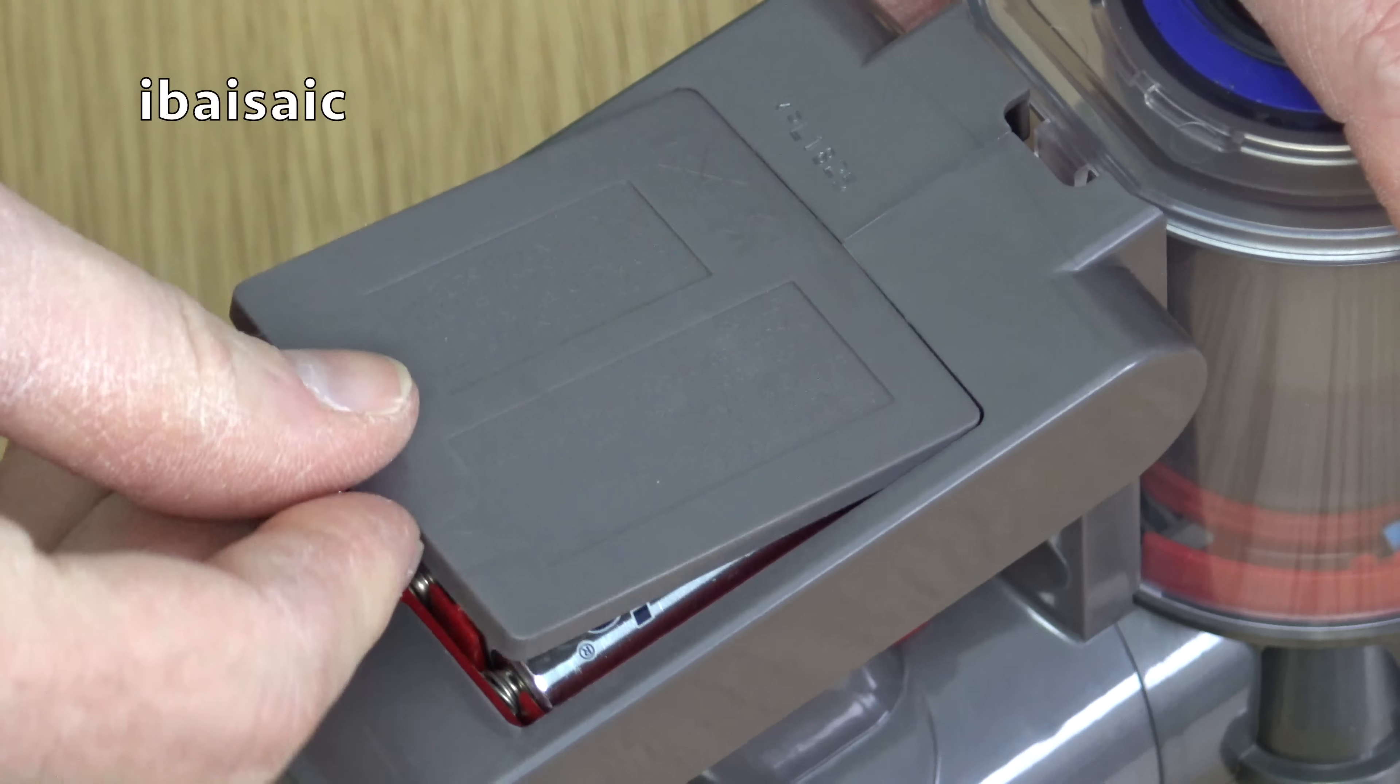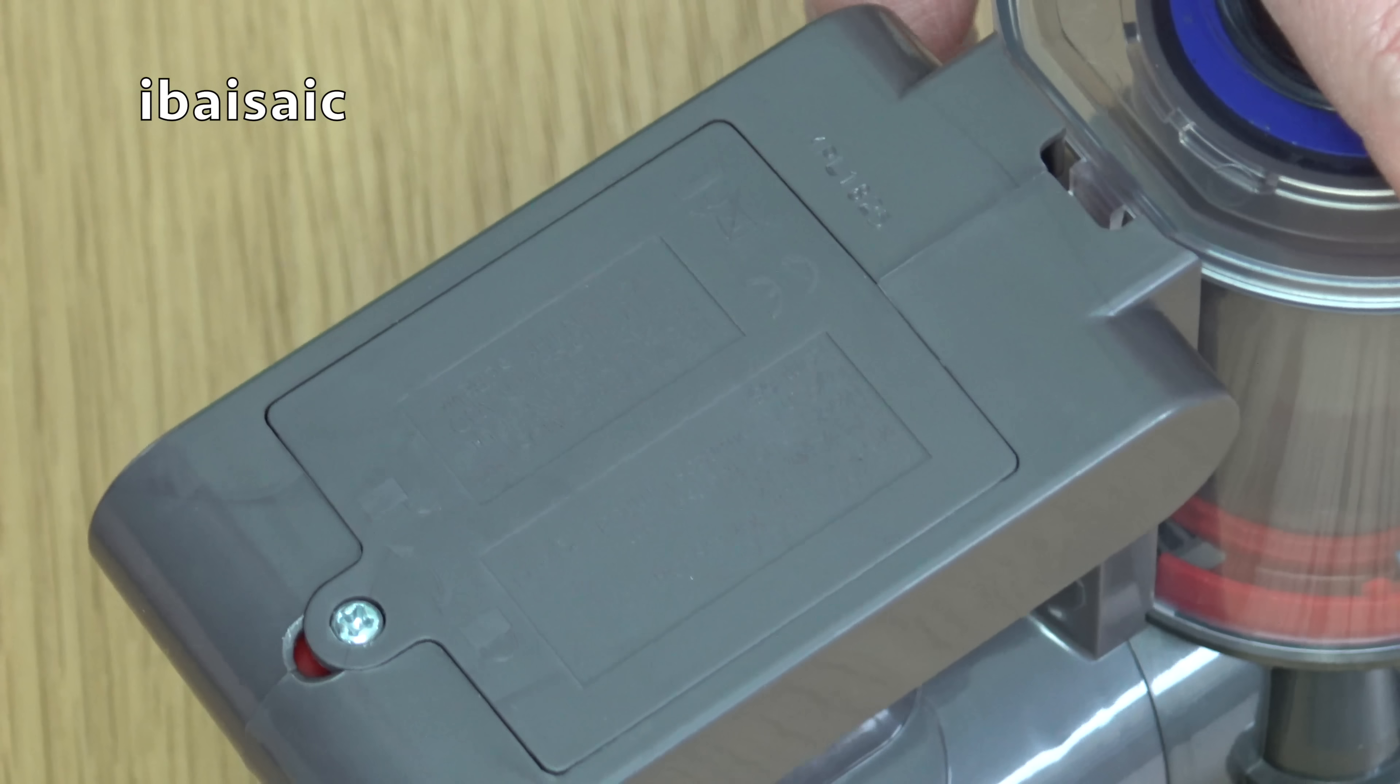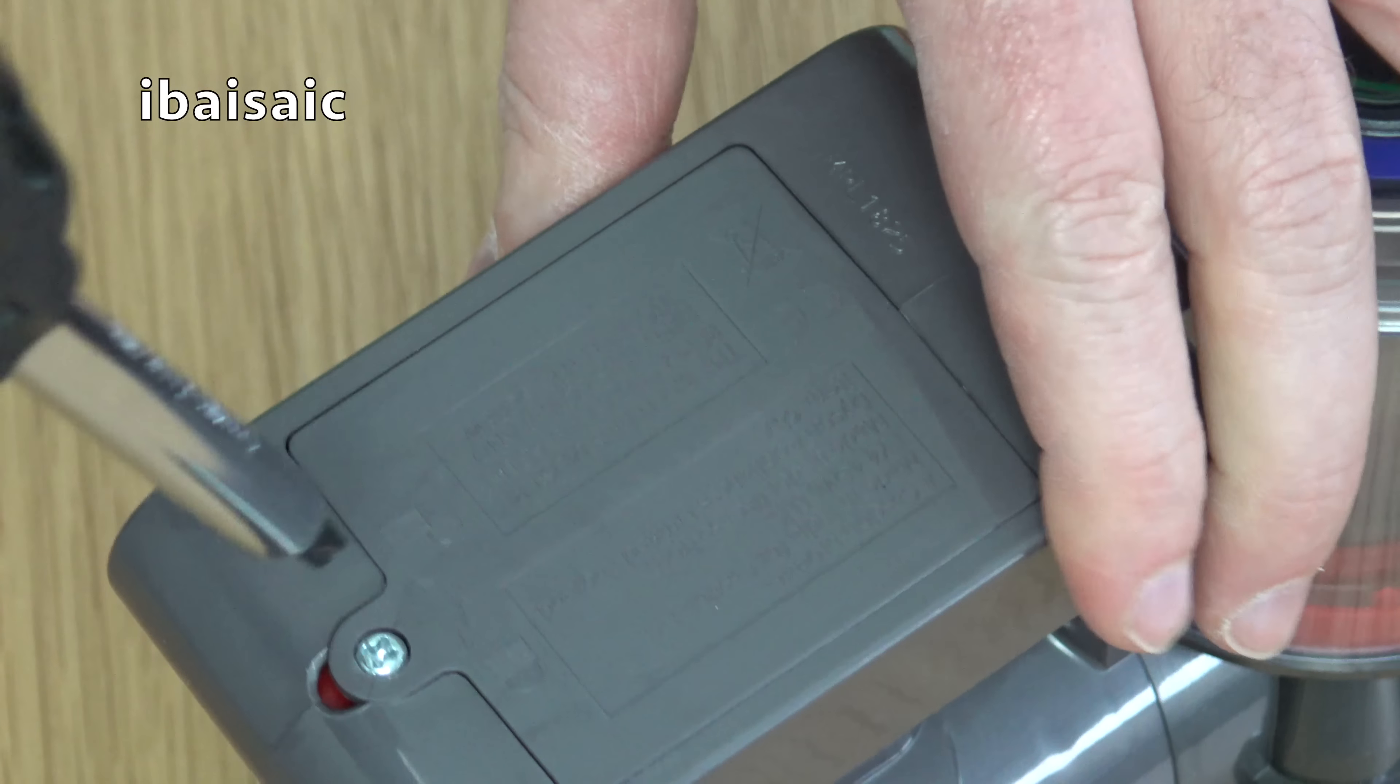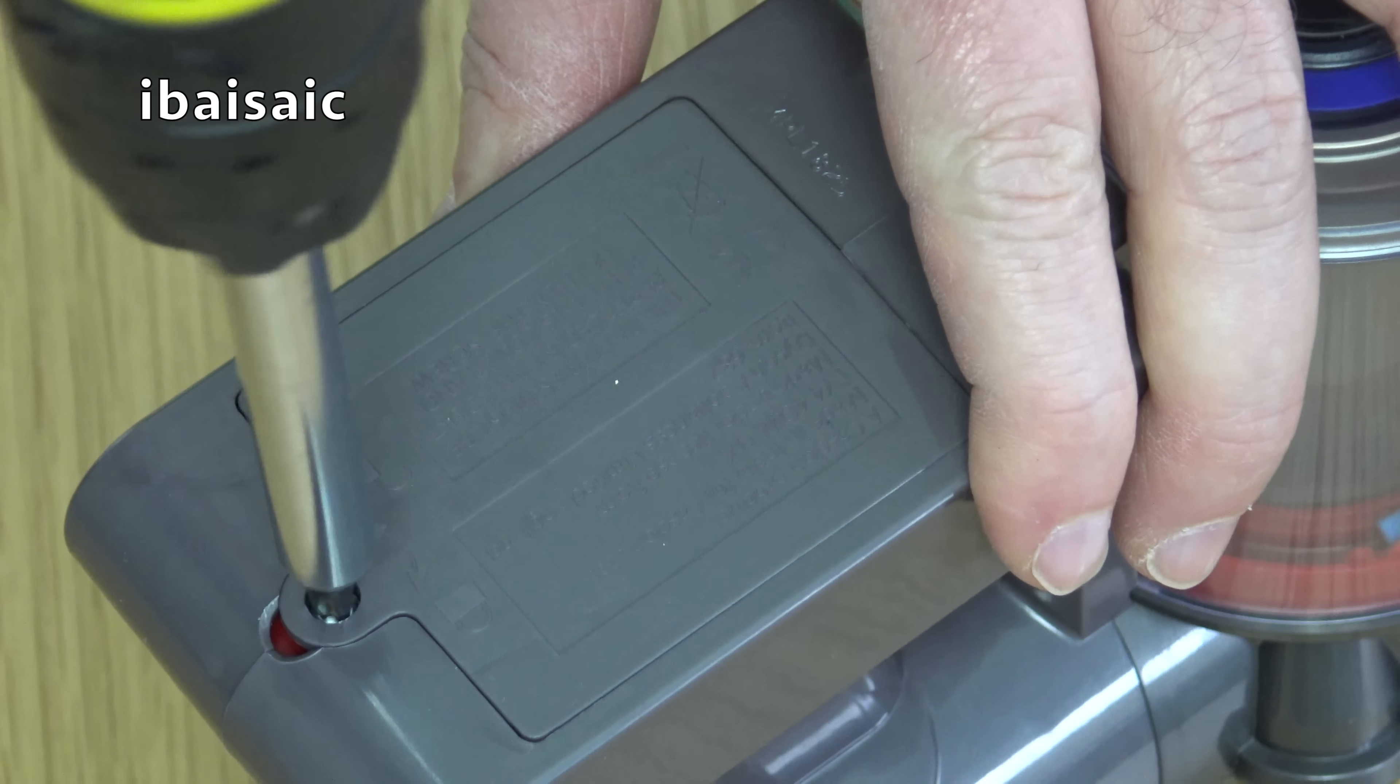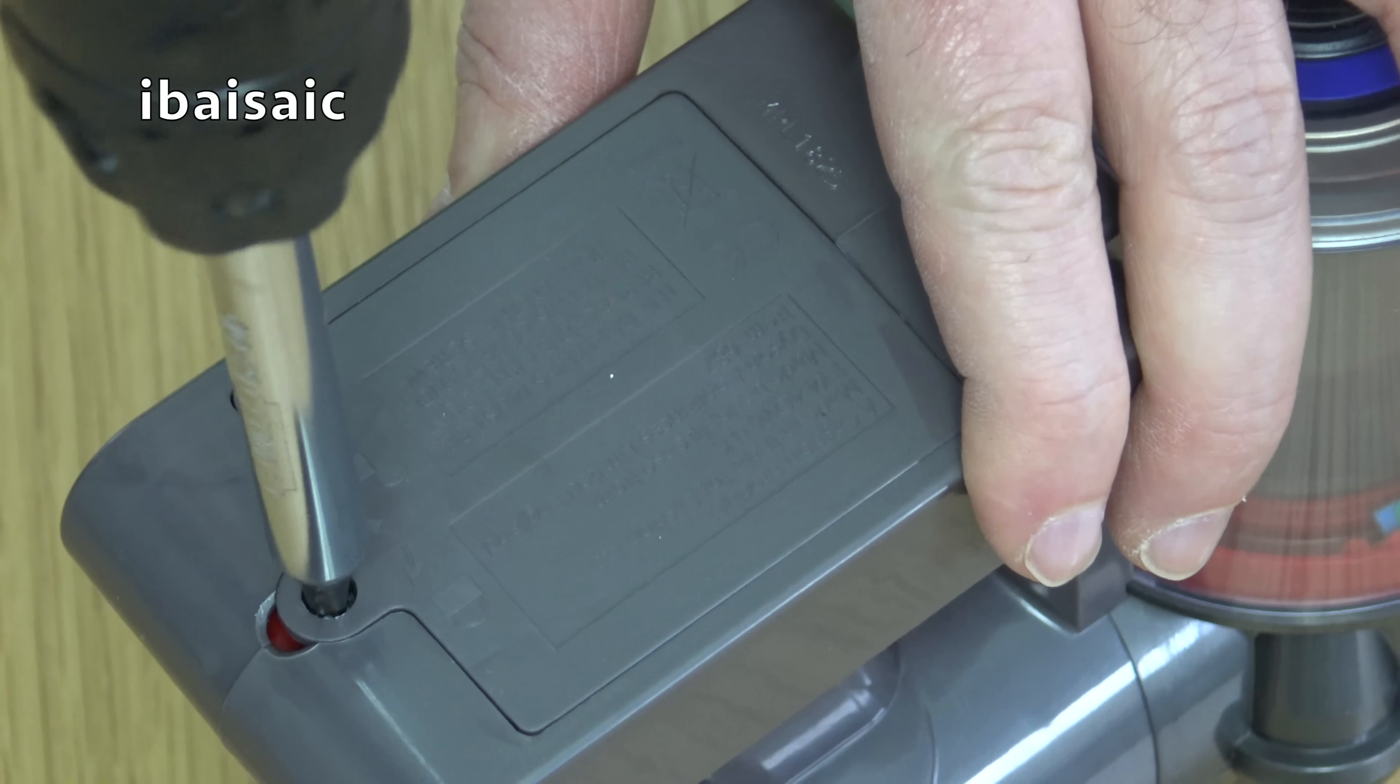And then we can pop the cover back on and do up the screw. Now we're ready to test this Kasdan Dyson vacuum.